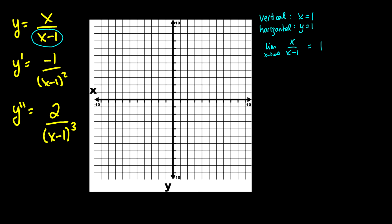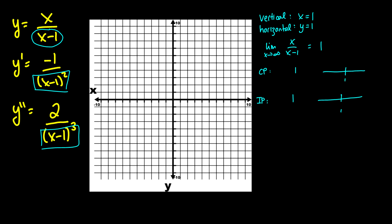Now let's find our inflection points and critical points. Our critical points occur where y prime becomes undefined, which gives us x equals one. For our inflection points we look at where y double prime is undefined or equal to zero, giving the same result. When we set up the number line and test values on each side of one — plugging in zero gives negative one over one which is negative, and a value greater than one gives negative one over a positive, also negative — so this whole graph is always decreasing.